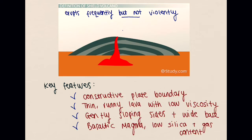Now the magma itself is basaltic magma. Basaltic magma tends to have a low silica content. Silica is a chemical that can affect the viscosity of magma — if it has a low silica content, it tends to be of a low viscosity, a runny magma.